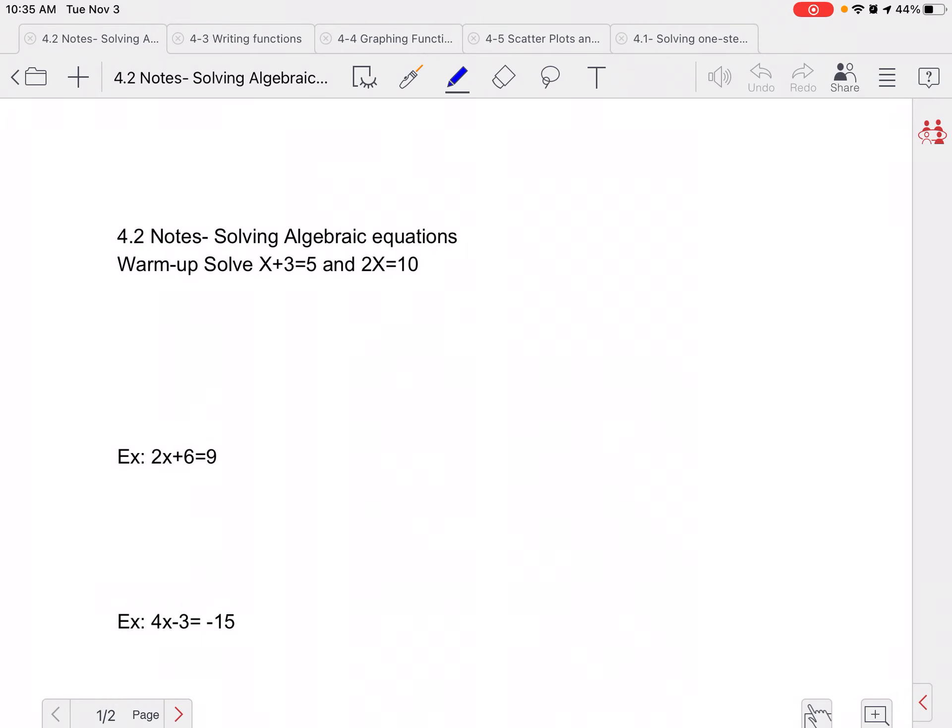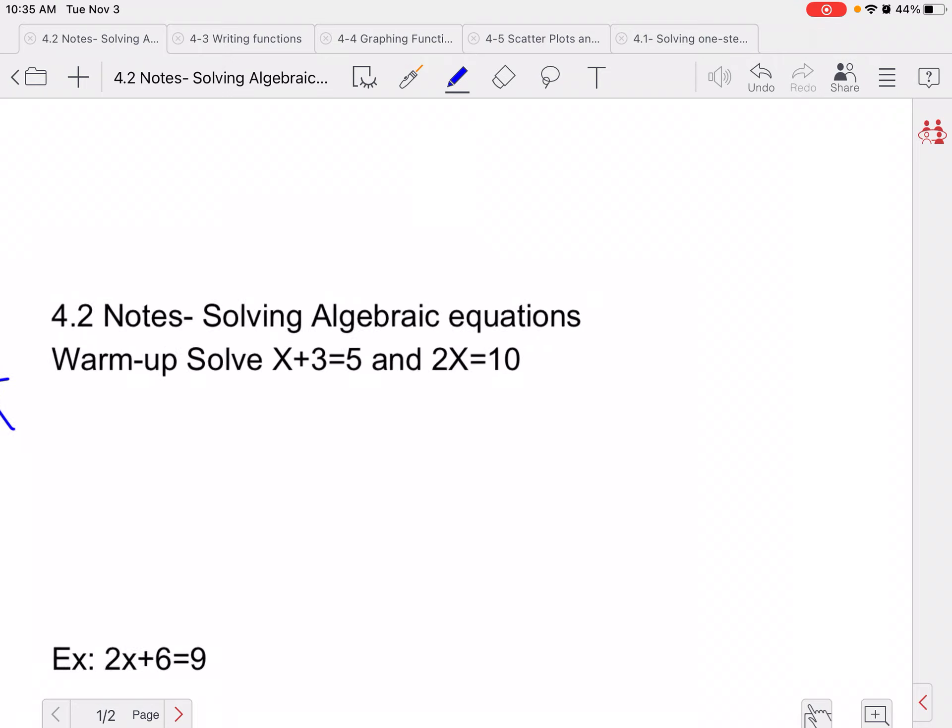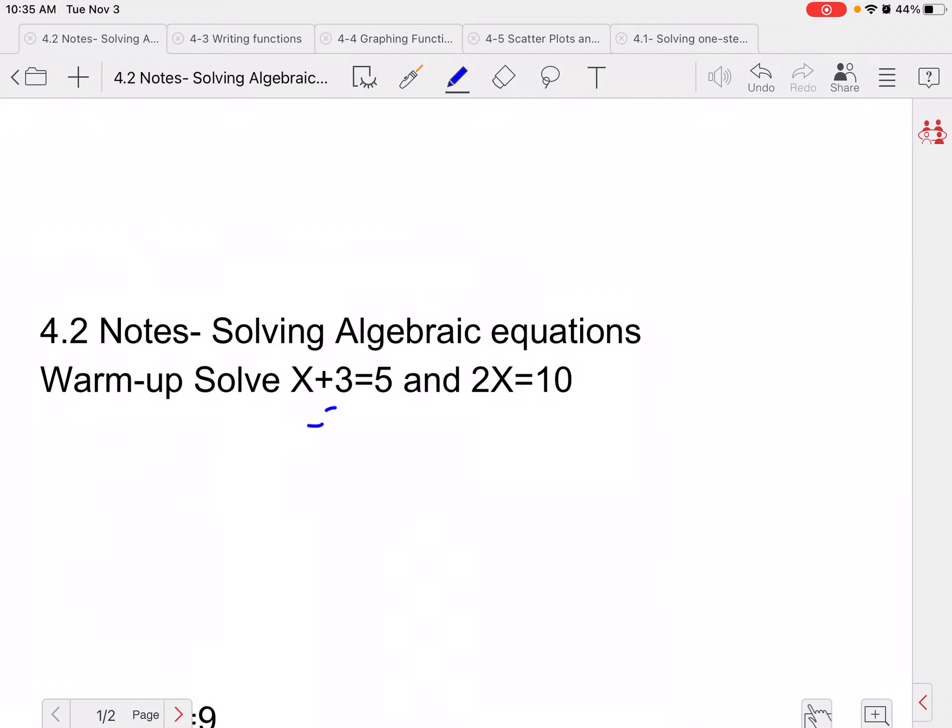Let's go ahead and I want you to try these two equations and tell me what you get as your answer. So if we do this, we're going to subtract 3 from both sides, so we get x equals 2. And here we would divide both sides by 2, so we get x equals 5.